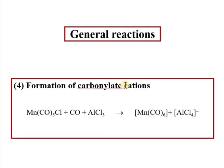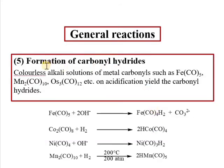The next kind of reaction is the formation of carbonylate cation. After that is the formation of carbonyl hydride. The colorless alkaline solution of metal carbonyls on acidification yields the carbonyl hydride. So metal carbonyl hydride can be prepared in the presence of a base followed by acidification.